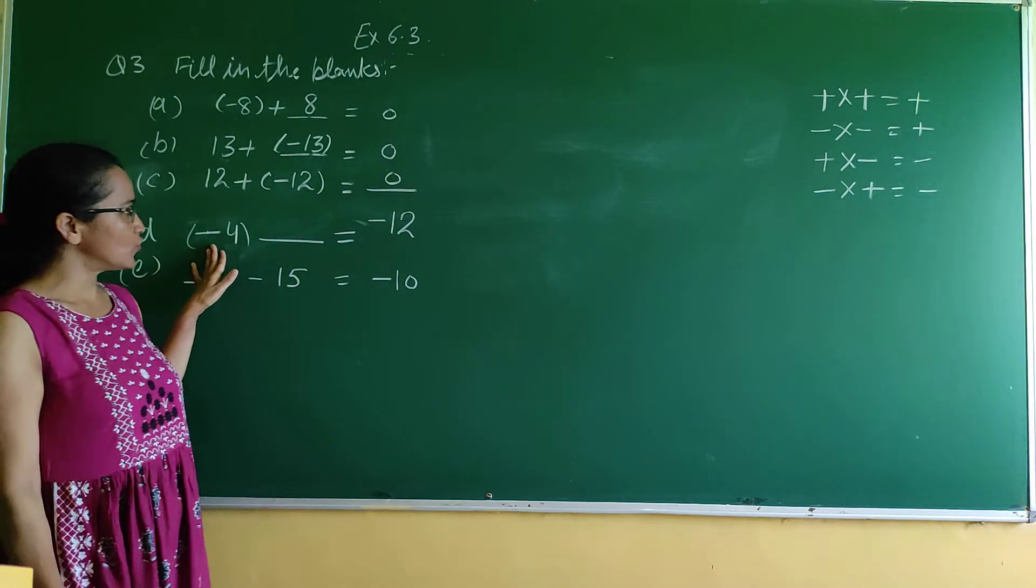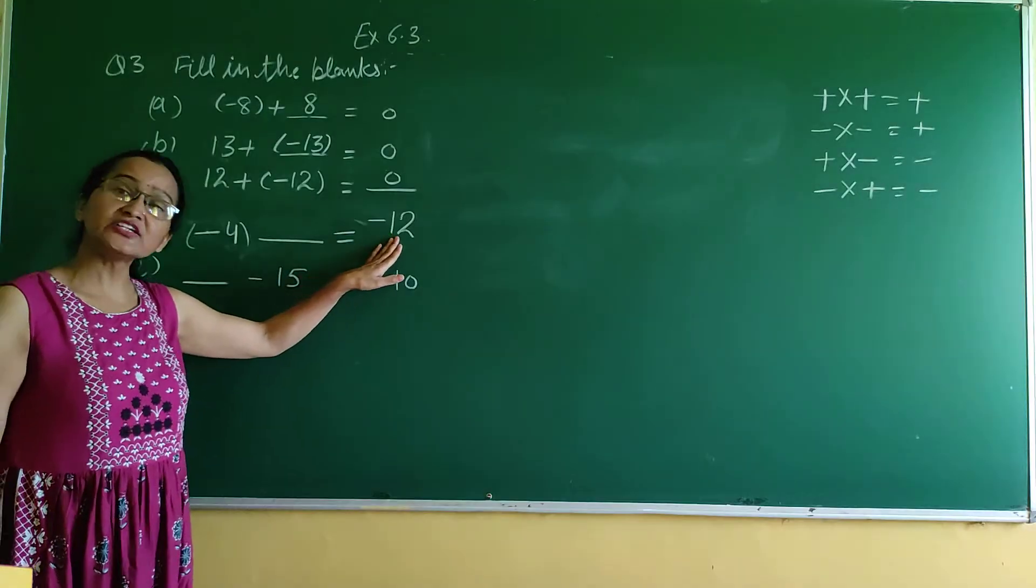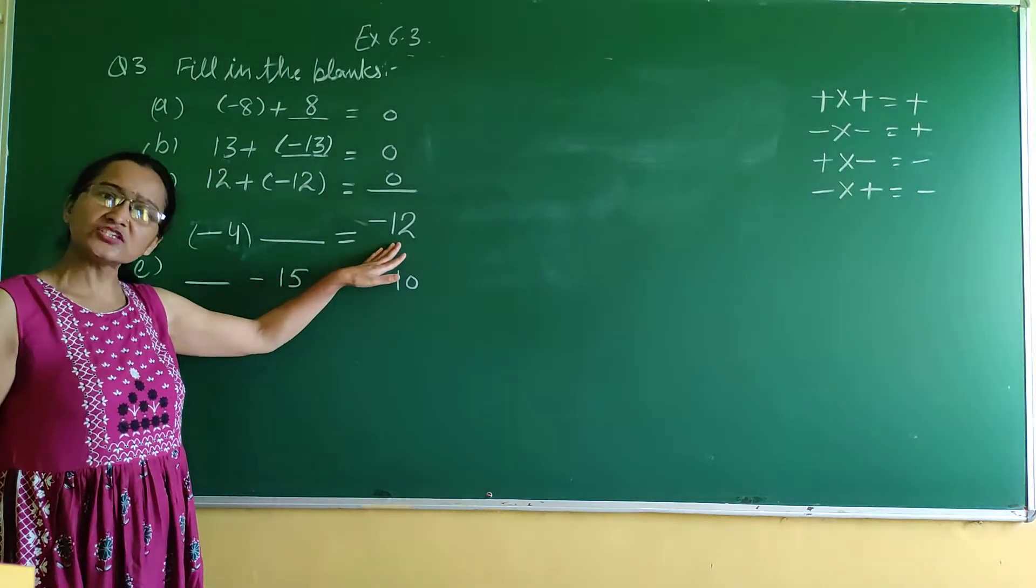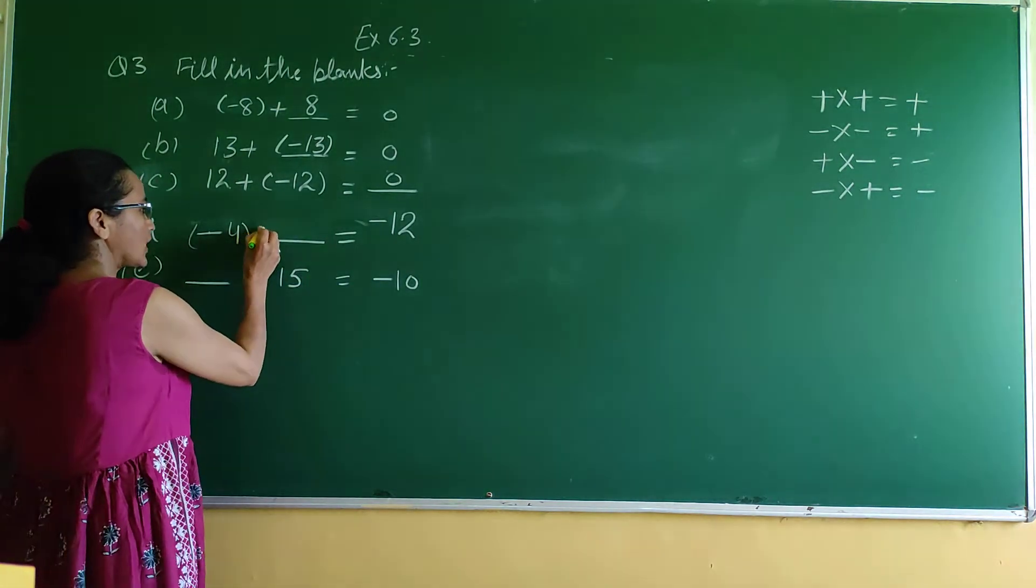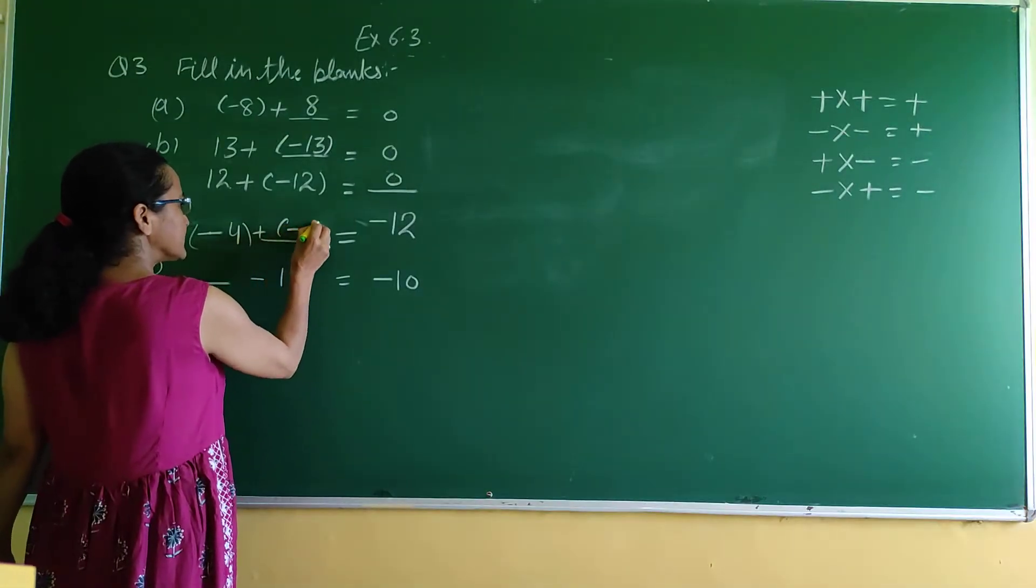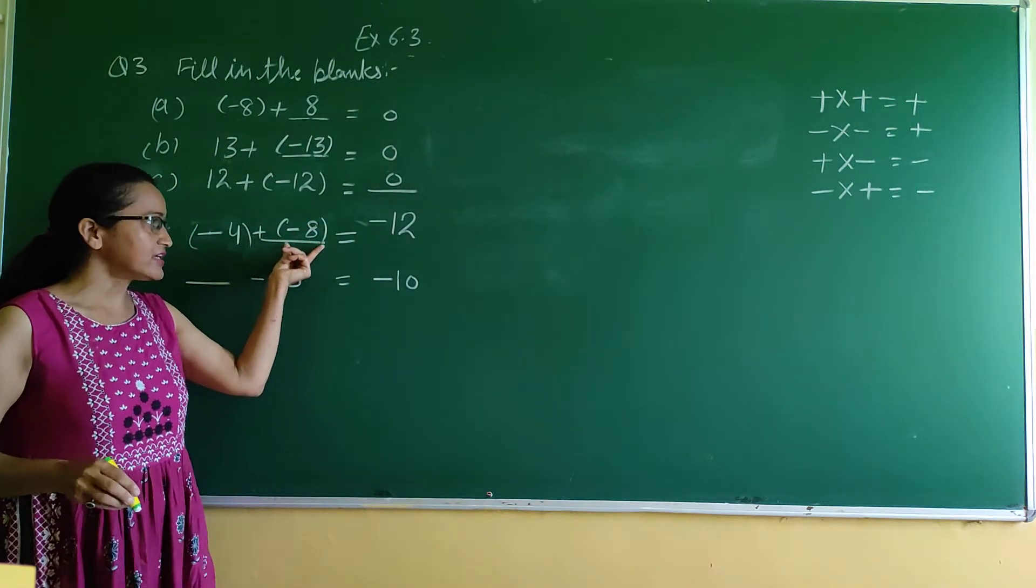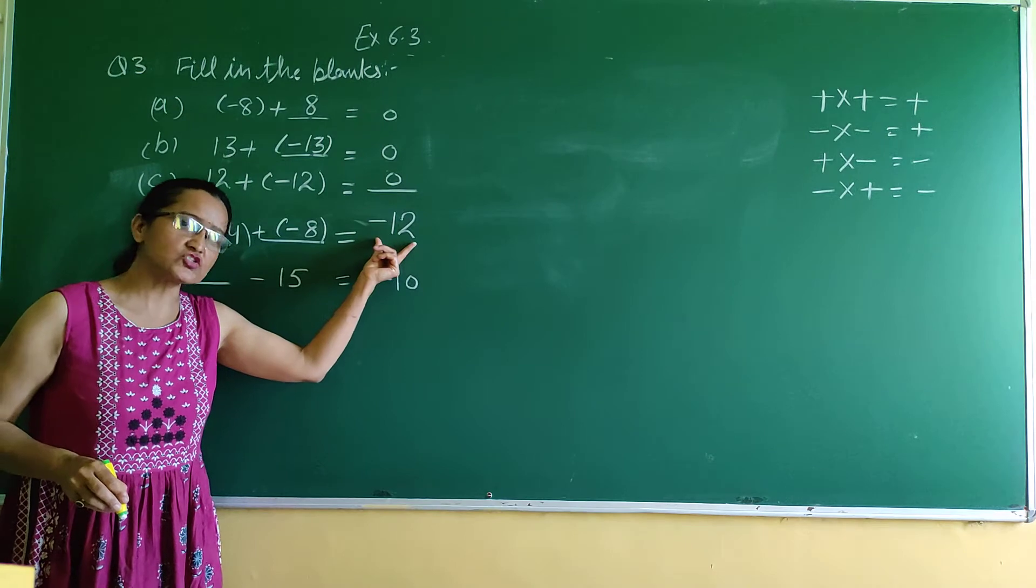Next is -4 plus blank equals -12. What do we add to -4 to get -12? The answer is -8. If you have -4 and add -8, you get -12.